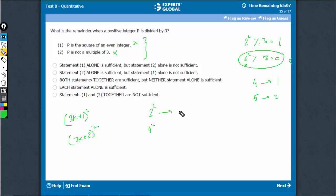In this case, the number is 4. The remainder is 1. So, number is 16. The remainder is 1. You will find that it will always be 1.